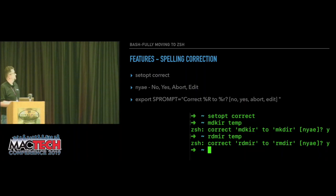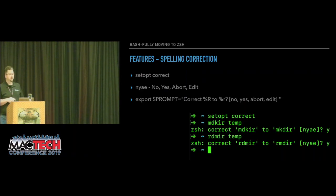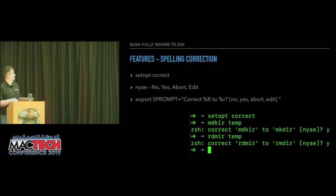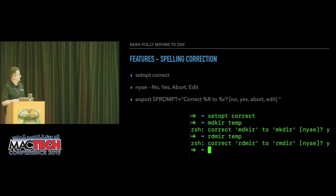Spelling correction helps when you can't type commands right the first time. To turn this on, use `setopt correct`. You get prompted with NYAE — No, Yes, Abort, or Edit. I like to change the prompt because I can't remember what NYAE means. If you misspell `mkdir`, ZSH will prompt: 'Did you actually mean make directory?' You type Y and it runs the command with the proper spelling.